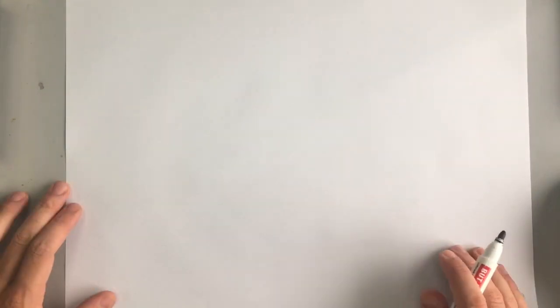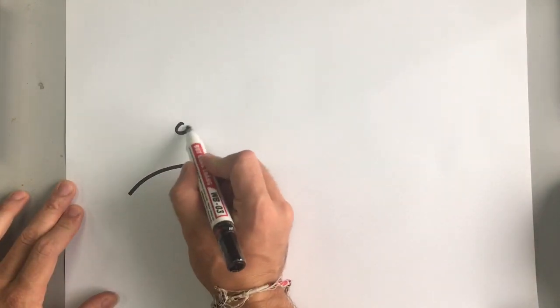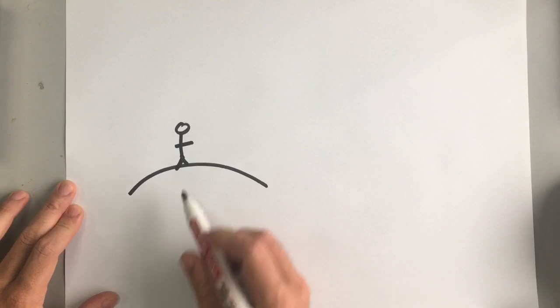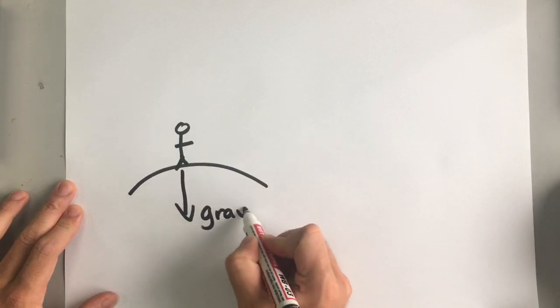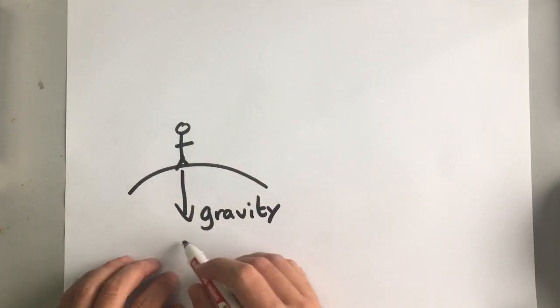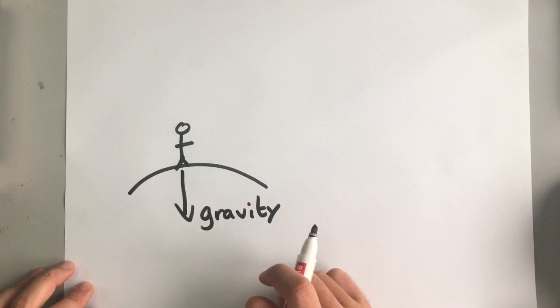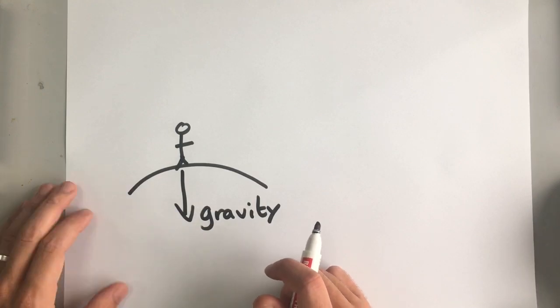The reason that we don't all go floating off into space is because of gravity. Gravity pulls us down to the center of the earth. Gravity is always pulling in the direction of the center of the earth.